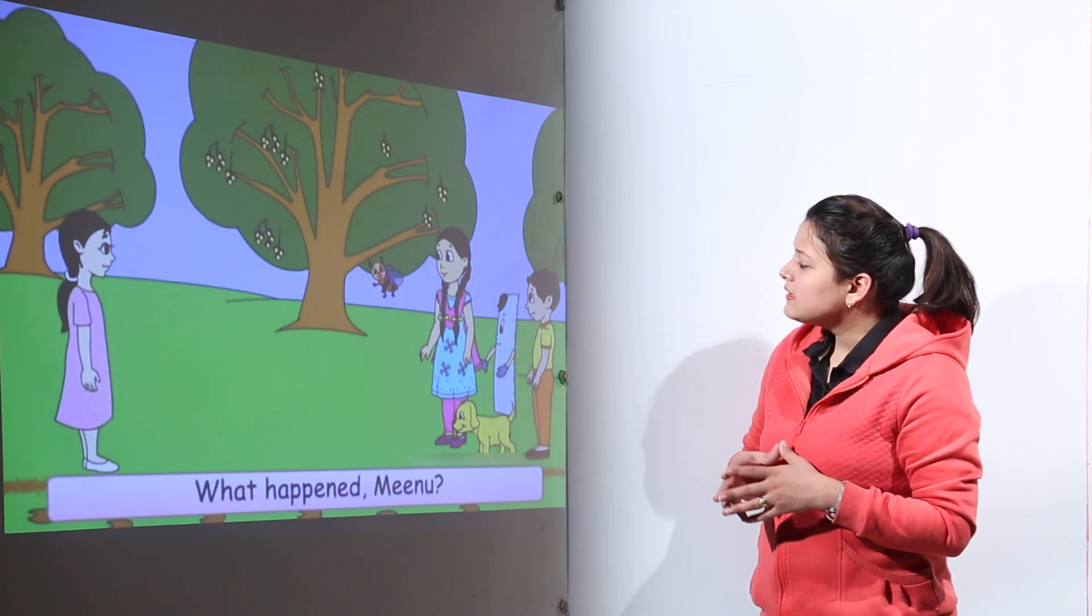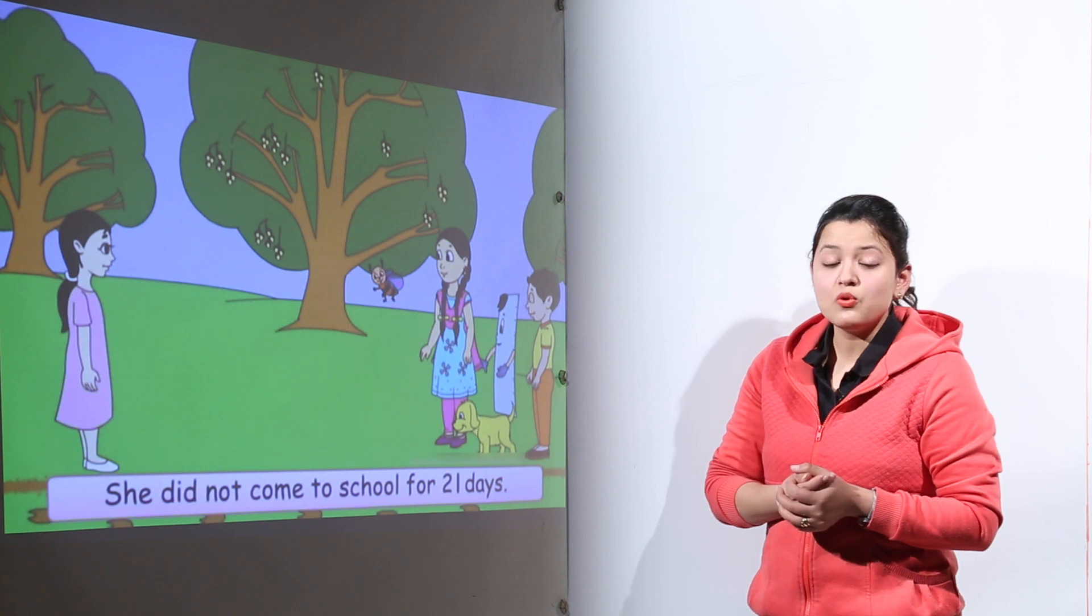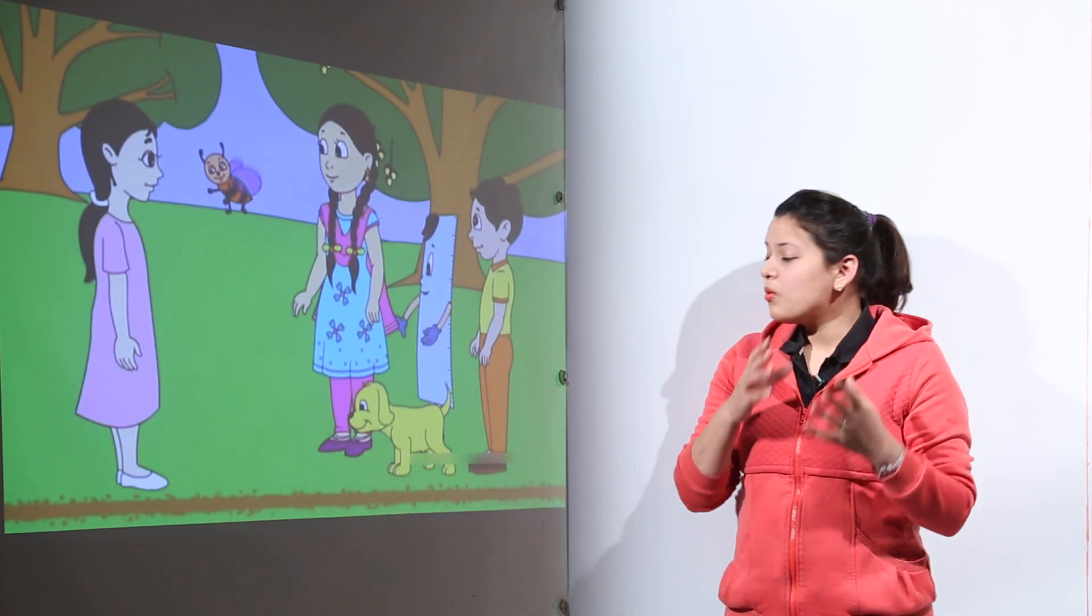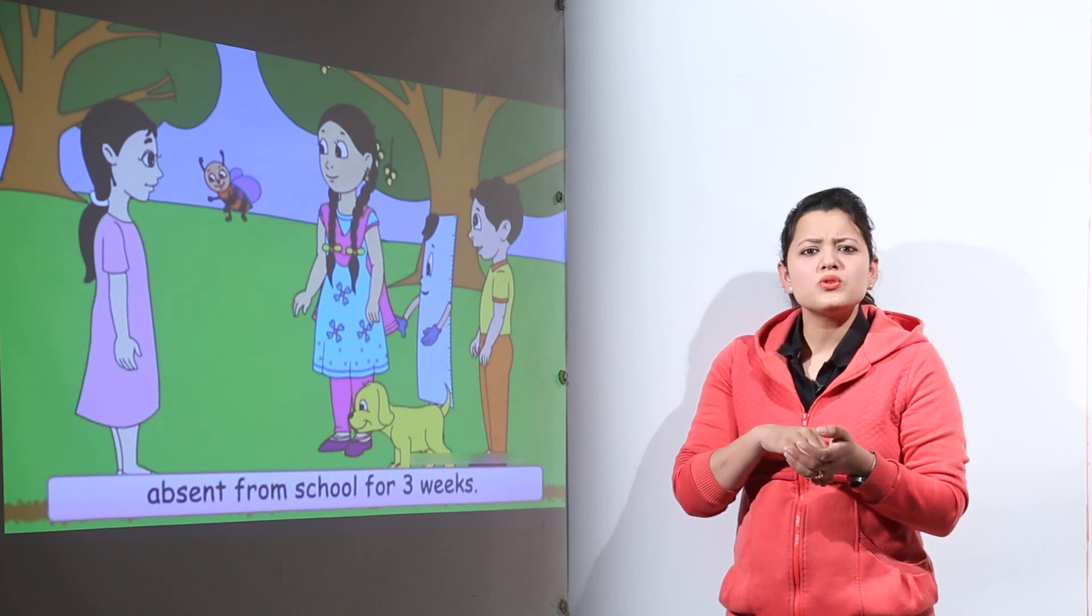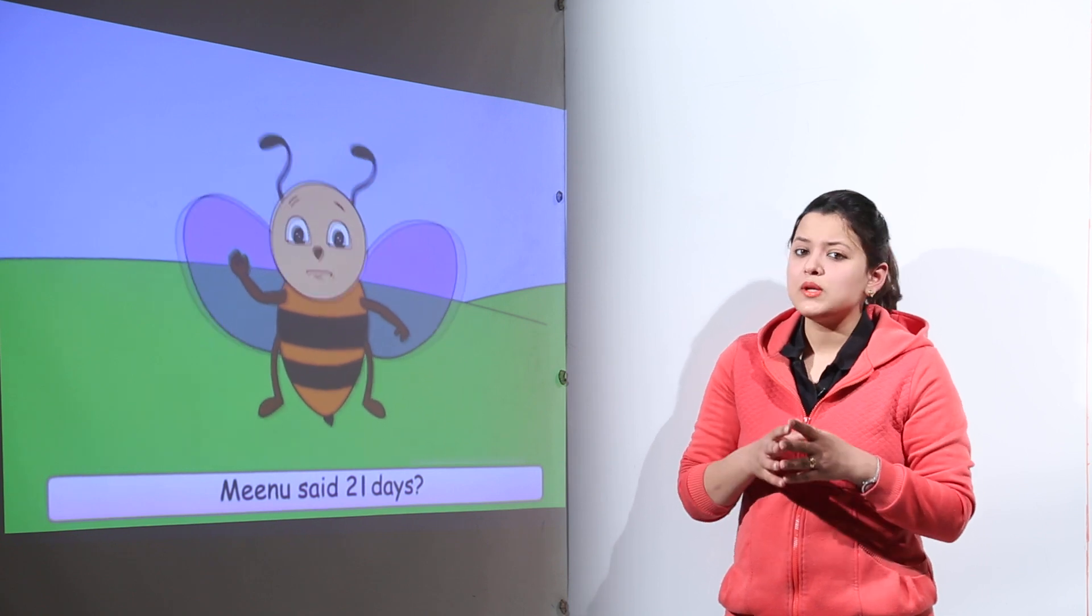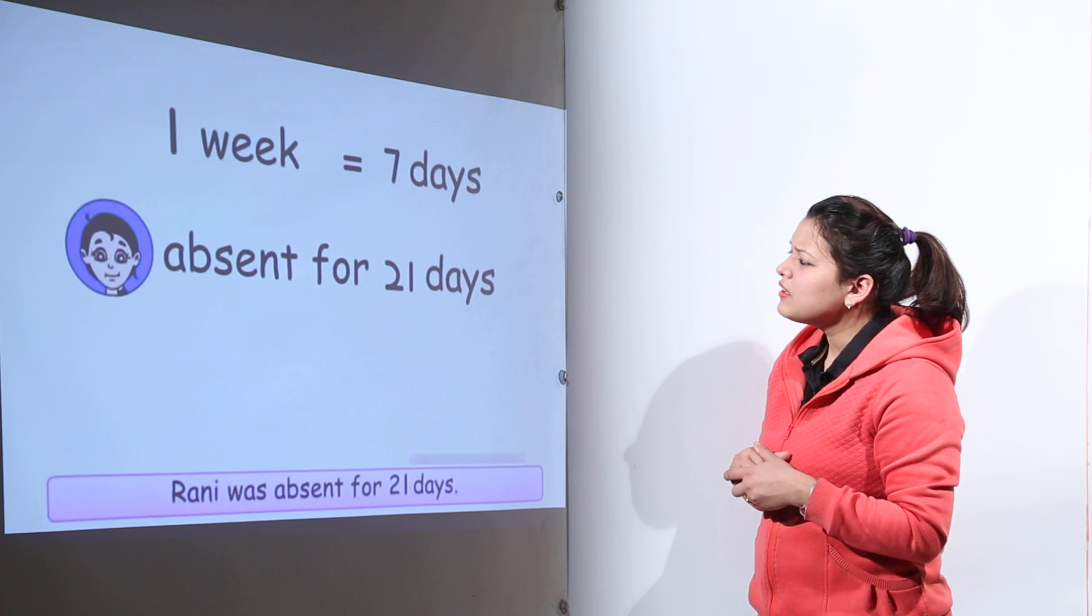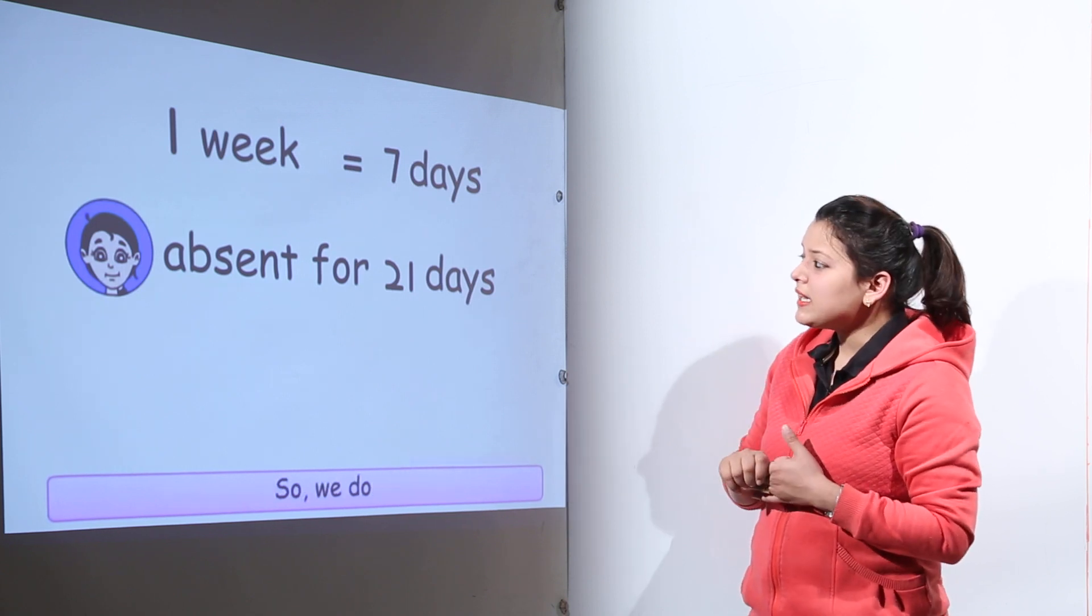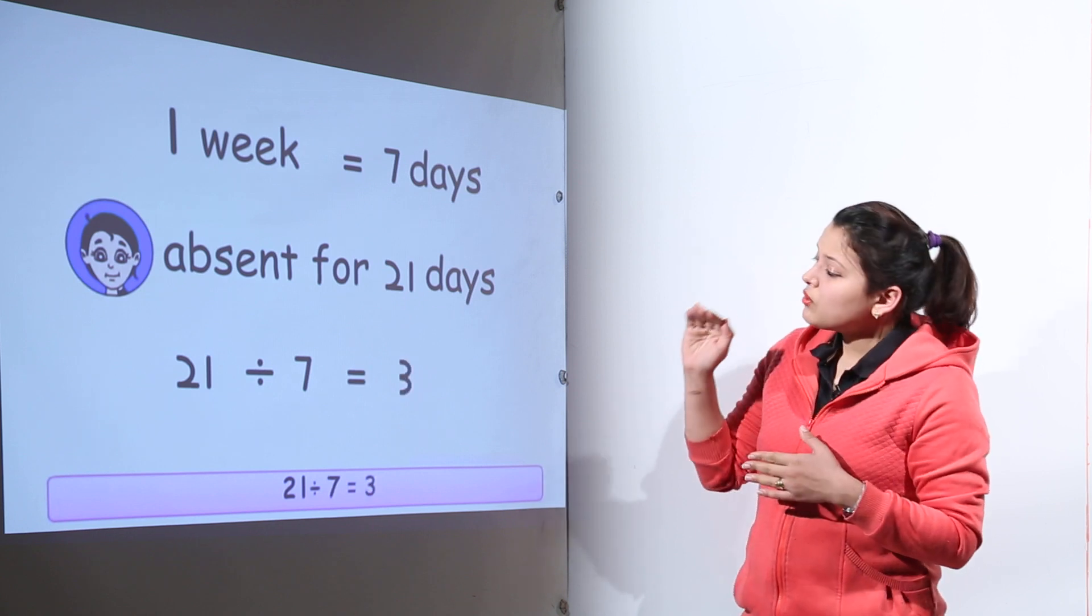Now you can see that the Chinu and her friends were just meeting another friend Rani who has been sick for so many days. Now she has been sick for 21 days and Chinu also said that she has been sick for 3 weeks. Now 21 days and 3 weeks, how does that make a difference?